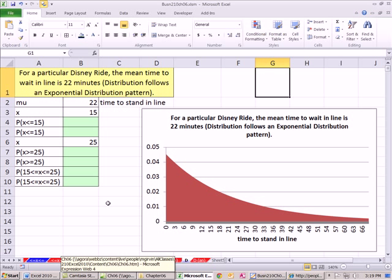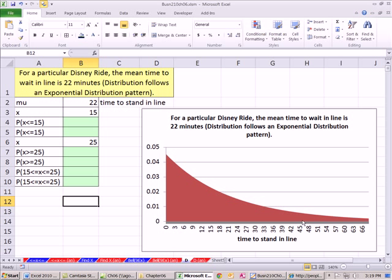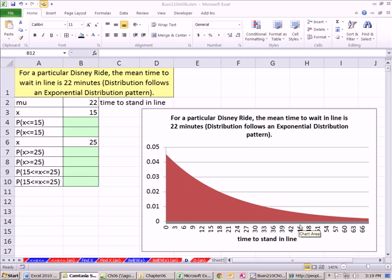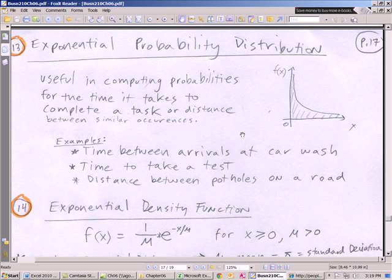In this video, the last video for chapter 6, we're going to talk about the exponential distribution, a continuous distribution with a continuous random variable. Now let's go over to our PDFs. Exponential probability distribution kind of looks like this. It's useful in computing probabilities for the time it takes to complete a task or the distance between similar occurrences.